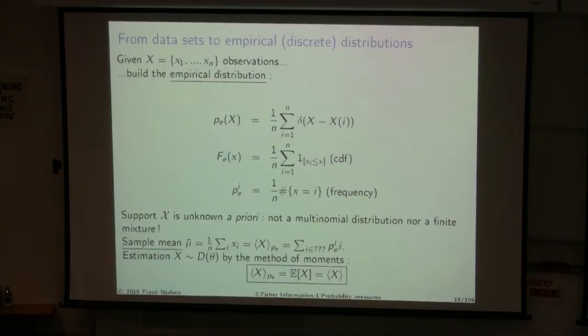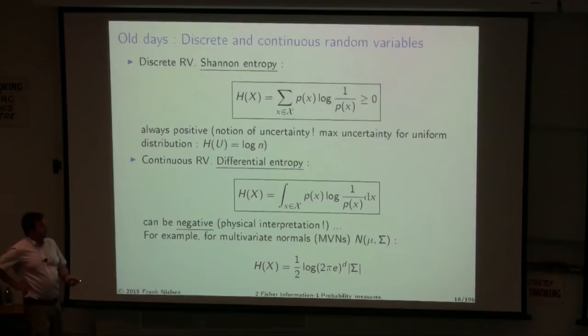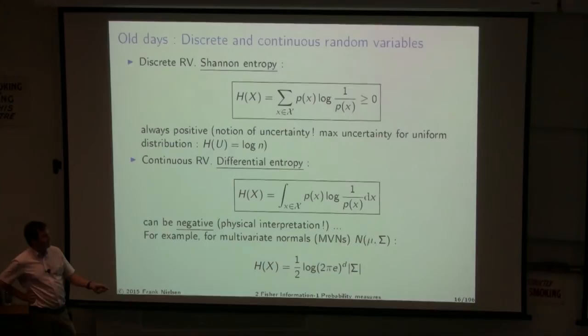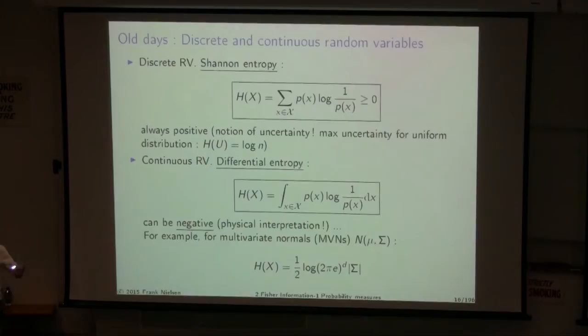Differential entropy can be negative. For example, for multivariate normals the differential entropy involves the log of the determinant of the covariance matrix, which can be negative if the determinant is small enough. This is somewhat disturbing since we think of entropy as uncertainty. In statistics, mixture models like the Gaussian mixture model are a flexible tool. Sampling from a GMM is a doubly stochastic process: first choose a component according to the weight vector, then sample from the normal distribution.